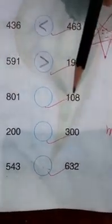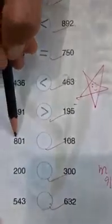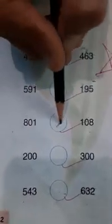Now 801 and 108. The 100s are different: 800 and 100. 800 is greater than 100, so 801 is greater than 108.